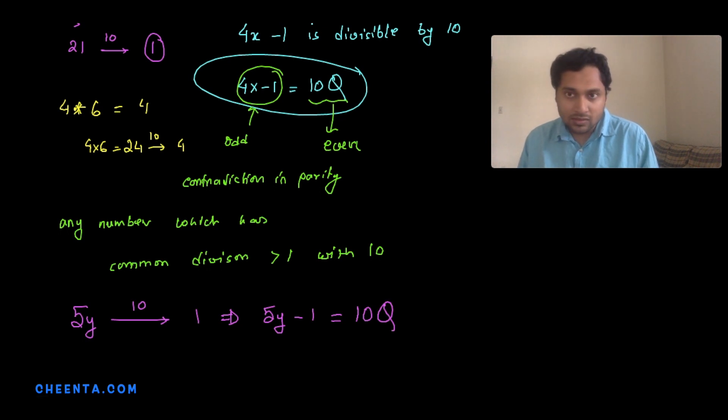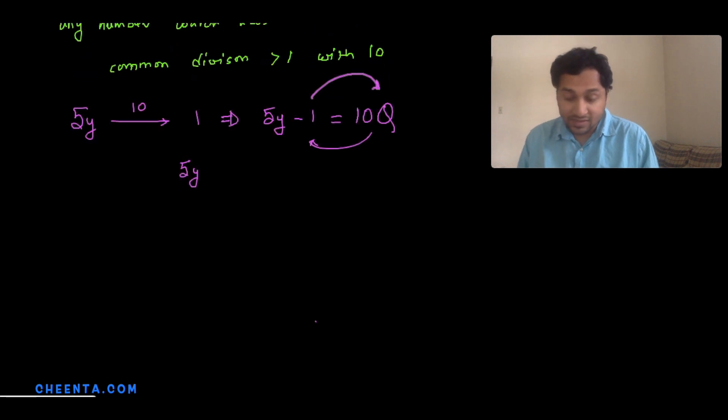But this is an impossible equation. Why is that? Well, you can do it like this: you can take this 10q to the left hand side and 1 to the right hand side, so 5y minus 10q equals 1. This is not possible because the left hand side is divisible by 5 - you can take a 5 common - and the right hand side is not divisible by 5.